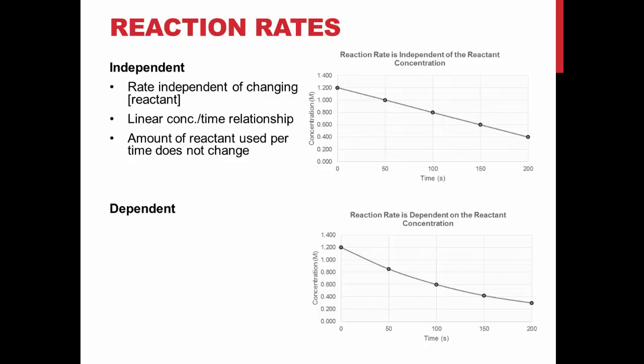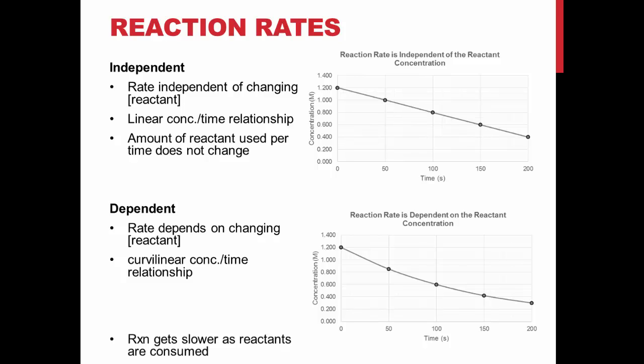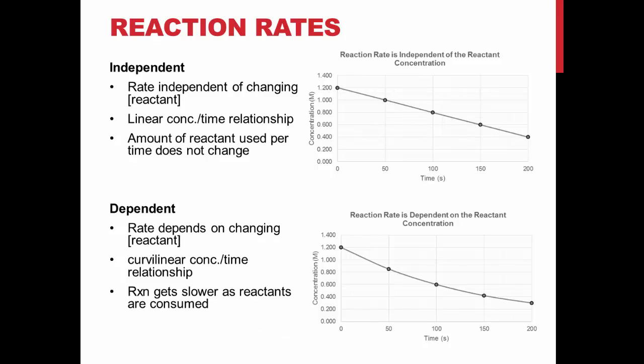The other category is a dependent reaction rate. This is where the rate depends on the changing concentration of the reactant. When we plot this data, we see a curvilinear concentration over time relationship. This means that the reaction gets slower as our reactants are consumed. We will be using this graphing technique today to visualize what category our reaction falls into with respect to each reactant.